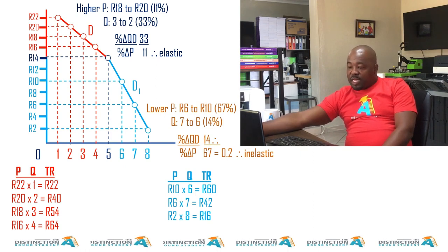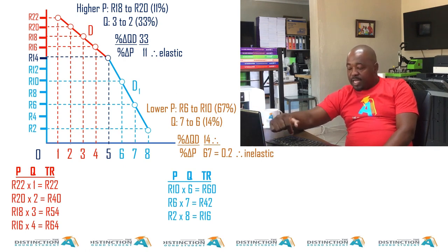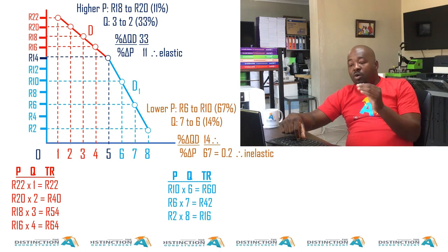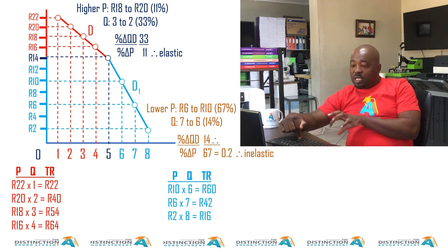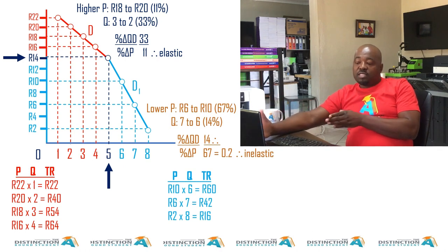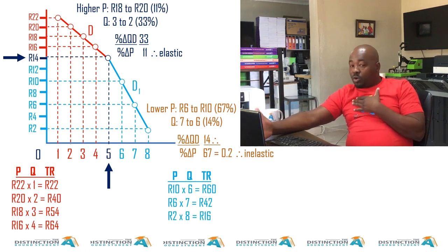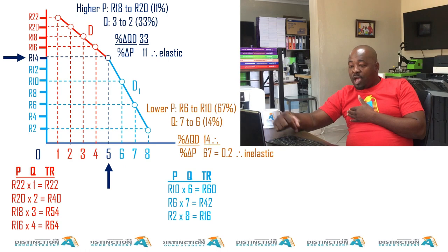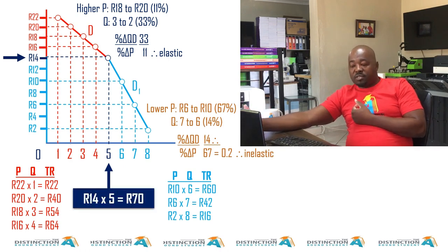But if we look at a lower price, we have 60, we have 42, we have 16, 64 is still the highest. Now, let's now compare all these outputs with five units. So five units, according to me, would be the best. Let's find out. Yes, it is 14 times five. It gives you 70. In this case, the best price for MTN is 14.